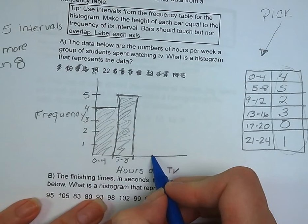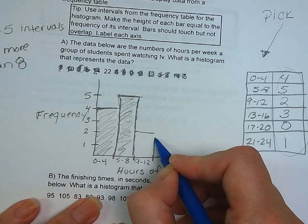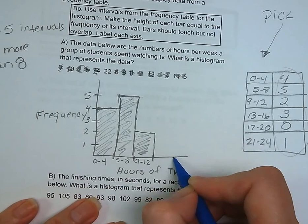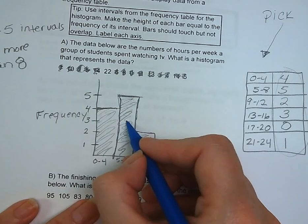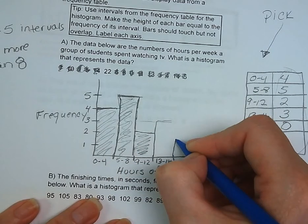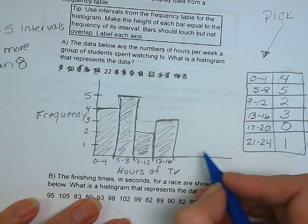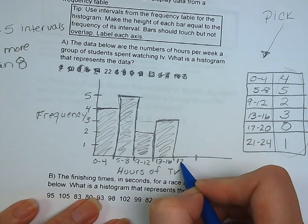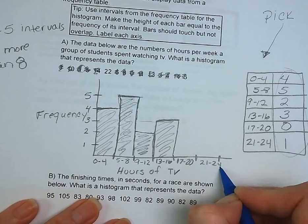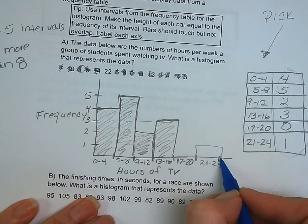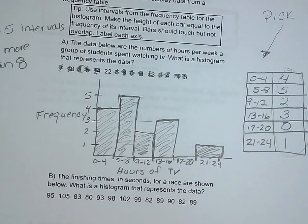Next bar, 9 through 12. There are only 2 students that have that. So we put a bar up to 2. Again, no gaps. 13 to 16, there are 3 students. Now, the 17 to 20 bar, we have 0 students. So there's going to be no bar there, but we still need to represent it on the graph. And now we've got 21 to 24. There's only 1 student.